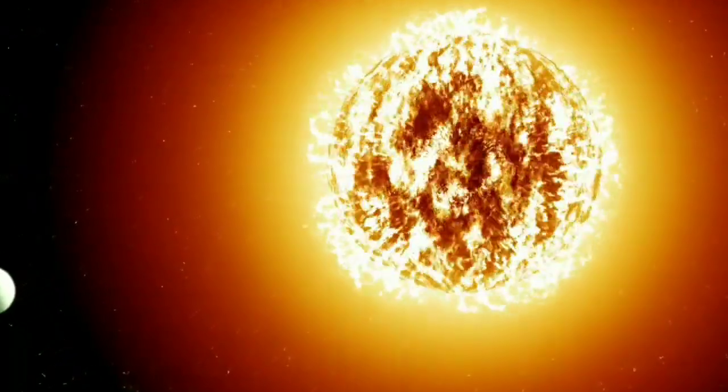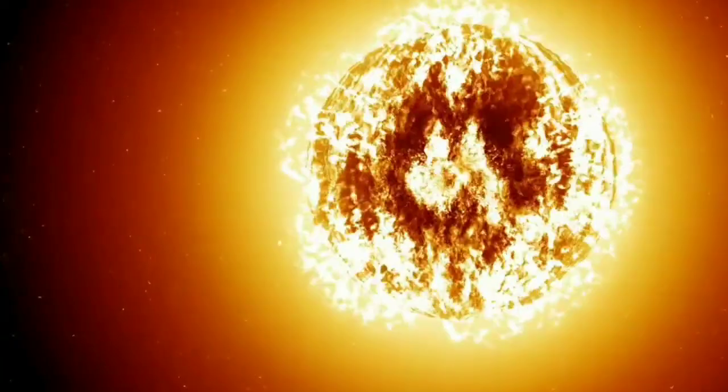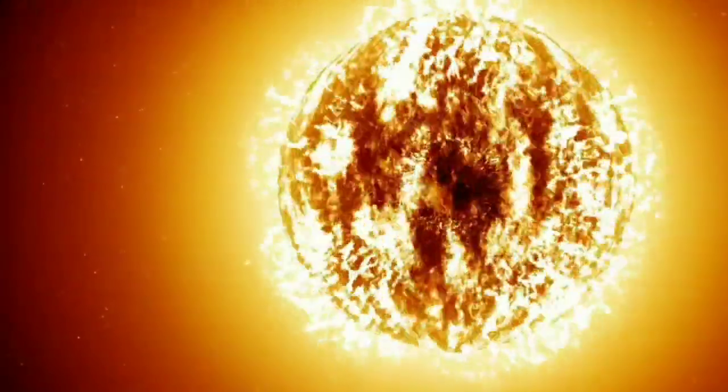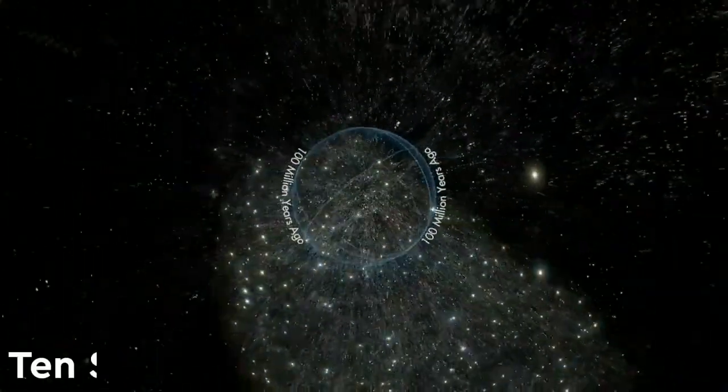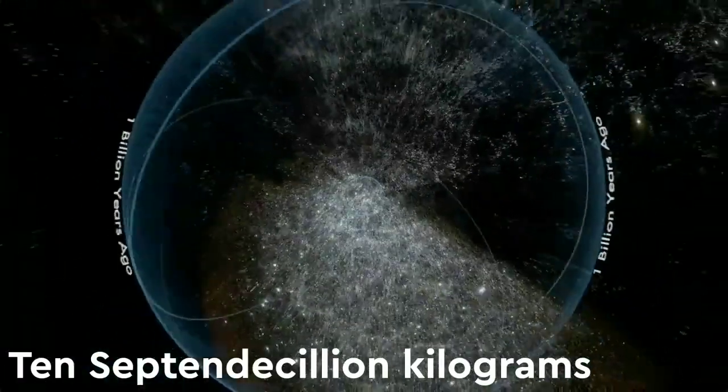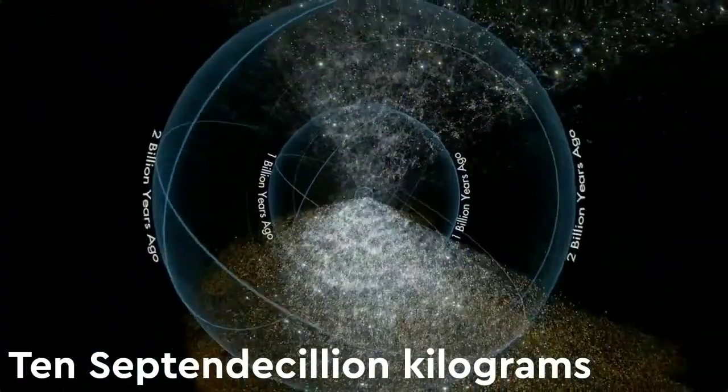According to Science ABC, on average a star weighs around 10 to the power of 32 kilograms, which means that the mass of the universe is around 10 to the power of 55 kilograms, or 1 followed by 55 zeros.